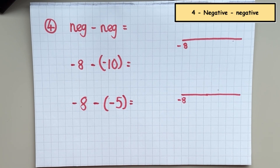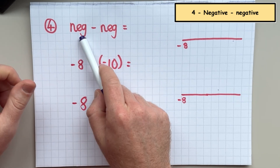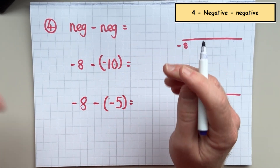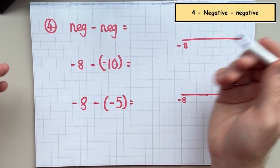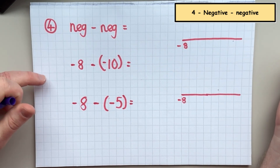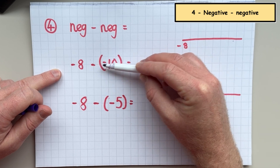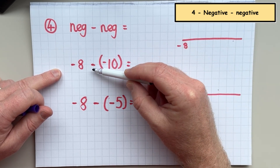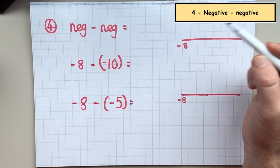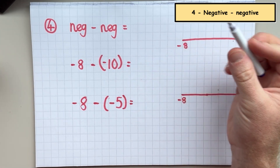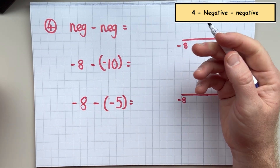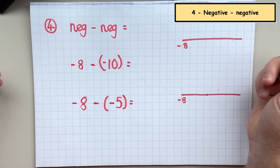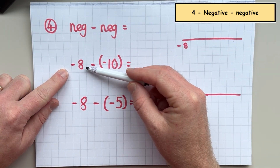So the final section of this video — before I give you a test — we are going to investigate what happens when you have a negative number and you take away a negative number. This is always the question people get confused with and end up getting wrong, because something strange happens. So here we have negative eight take away negative ten. Even though this is a taking away question, we're actually going to end up with a larger number, because when you have two negatives together like that, it actually changes into a positive. So an easier way to think about this is negative eight plus ten.